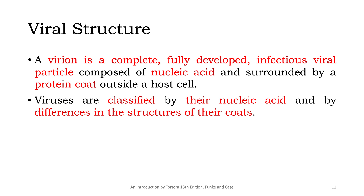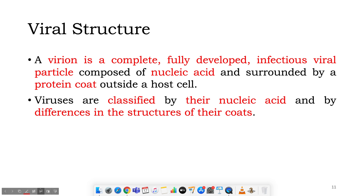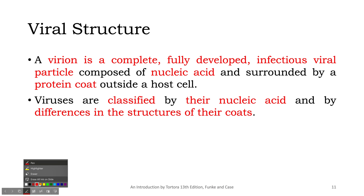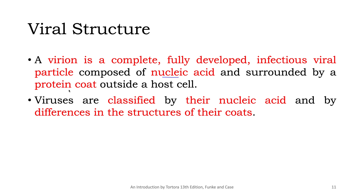Coming to viral structure: 'virion' is the term used to describe a complete viral particle. A complete viral particle is composed of nucleic acids — either DNA or RNA — and a protein coat surrounding it. Based on their nucleic acids and coat structures, viruses are classified, for example into double-stranded or single-stranded types. Different coat structures are also used in the classification of viruses.